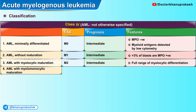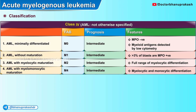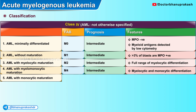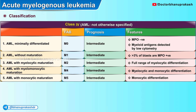The fourth variant is acute myelogenous leukemia with myelomonocytic maturation, classified under the M4 category of the FAB system, showing myelocytic and monocytic differentiation. The fifth variant is AML with monocytic maturation, classified as M5 under the FAB system, showing monocytic differentiation.